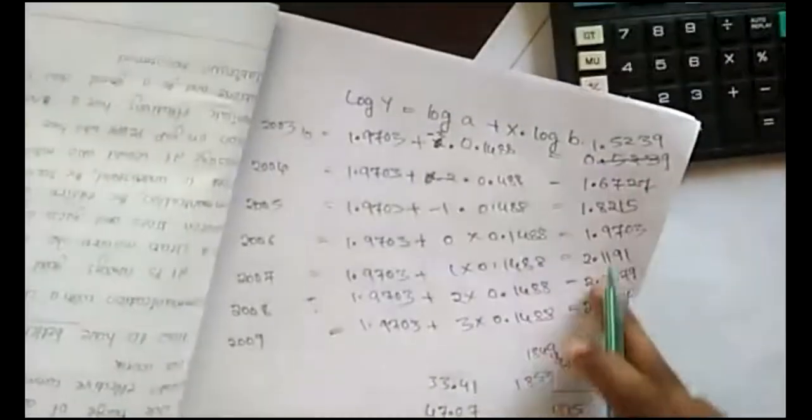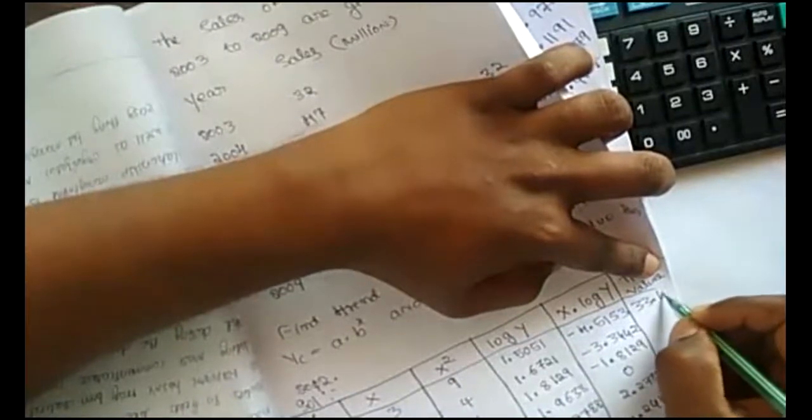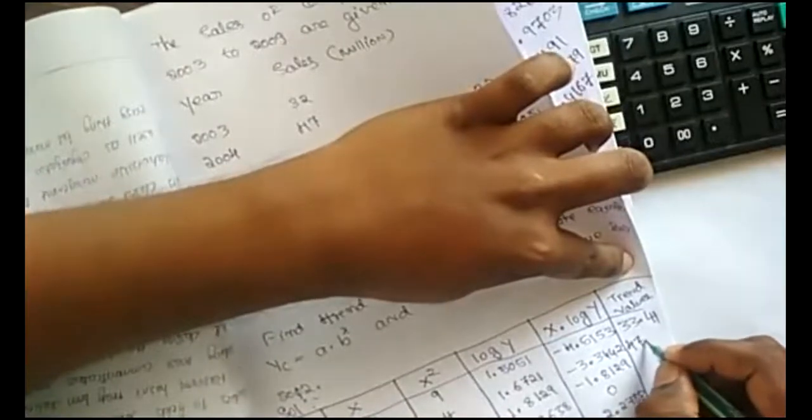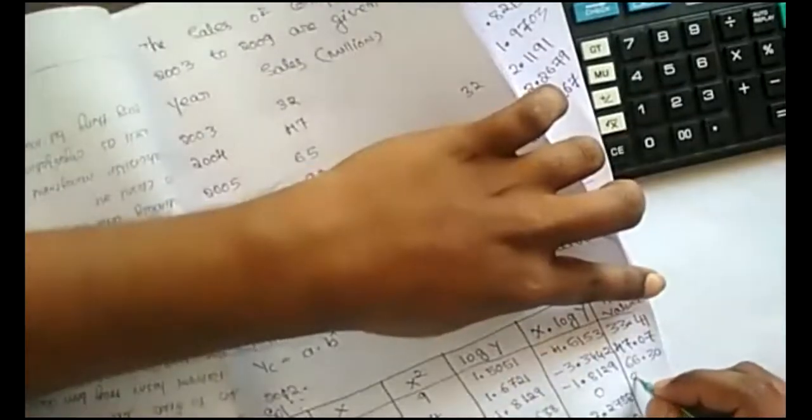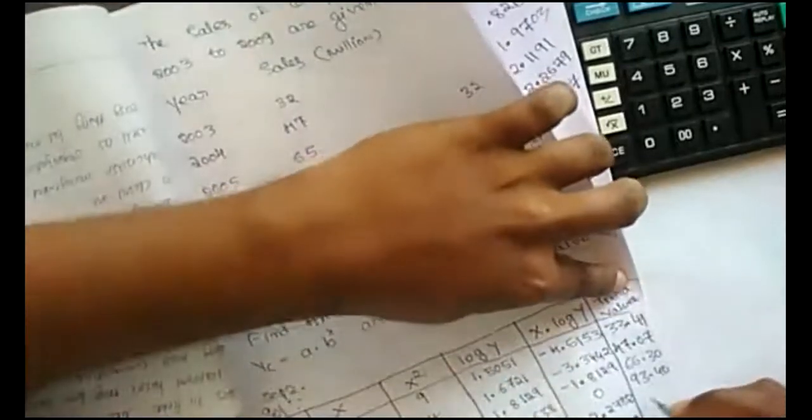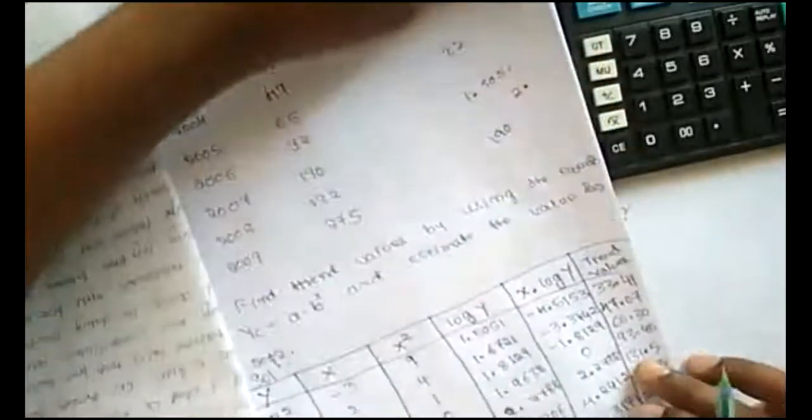Now, see I calculated antilog for all these values. So this one is the trend values, actual trend values. I'll just write these values in column, table column. For 2003, 33.41. And for 2004, 47.07. Next, 66.30. 93.40. 131.45. Next, 185.3. Next, 261. So write down trend values.